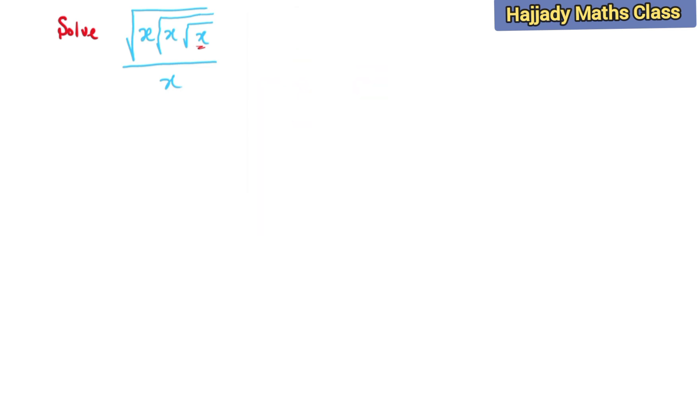Now in solving this, we have root x, root x, multiplied by x raised to power 1/2, because we know that the square root of x is the same thing as x raised to power 1/2. So multiplying this, also this is having the power of 1, so multiplying the two together...